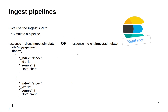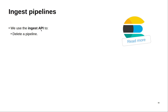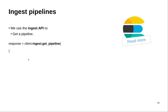Here is another implementation. If you don't want to pass the ID, you can give the pipeline directly inside the simulate method. In this example, I have just one process that lowercases the text — you can choose either approach. With the ingest API, you can also delete a pipeline: just call the delete pipeline method and provide the ID. Similarly, to get a pipeline, call the get pipeline method with the ID and it will return the pipeline to you.